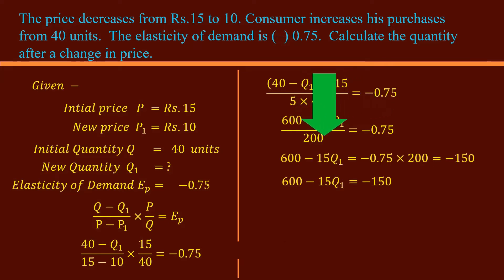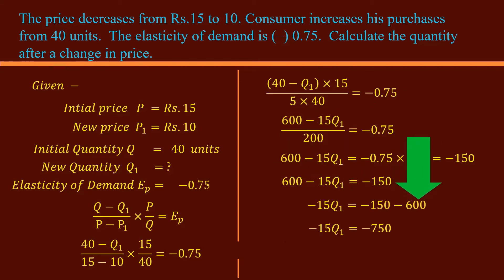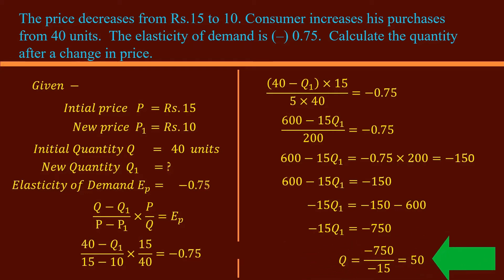Take the constant 200 to the right hand side. Multiply minus 0.75 with 200 to get minus 150. Keep in mind, when a negative and positive value are multiplied, we get a negative value. Take 600 to the left hand side — positive 600 becomes negative 600. Negative 150 and negative 600 are added to give negative 750. Negative 15 is taken to the right hand side: negative 750 divided by negative 15 is 50. The new quantity is 50 units.